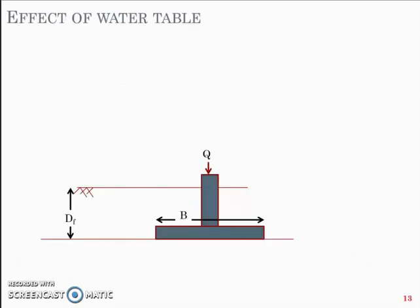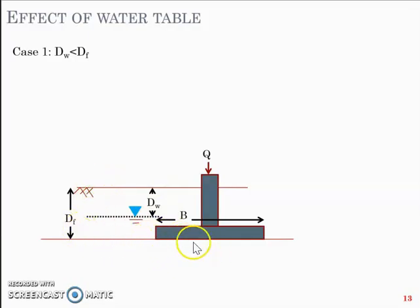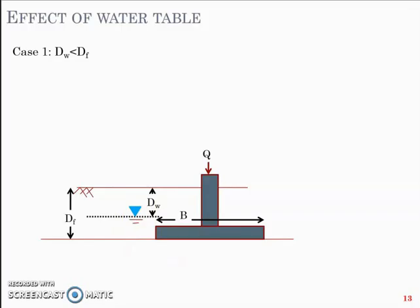We will discuss the effect of water table on bearing capacity, for which we shall take Case 1 where dw is less than df — meaning the depth of the water table below ground level is less than the depth of the foundation. Whatever soil comes above the water table has bulk unit weight gamma, and whatever comes below it will be submerged, so we use gamma dash below the water table.